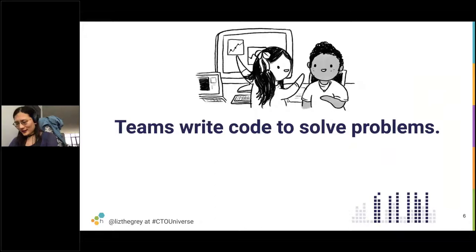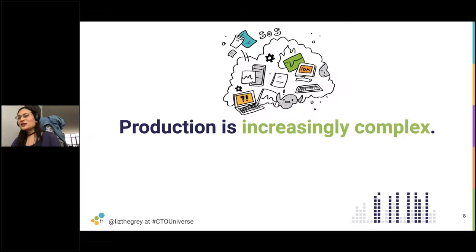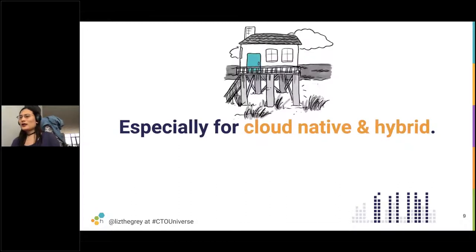On our teams, as leadership, we try to get our teams to solve problems for us, and most of the time the way they do that is they write code. However, I think all of us would agree that your team's job is not done when they commit the code into Git — there's a lot more work that has to go into running a reliable service. Our production systems are increasingly complex, from both unintentional complexity and complexity we need to thoughtfully add. It's especially more difficult when you add cloud-native technologies like Kubernetes or chaos engineering, or if you're operating in a hybrid environment.